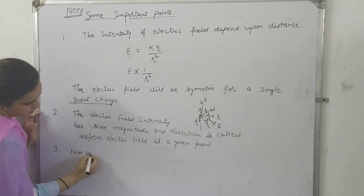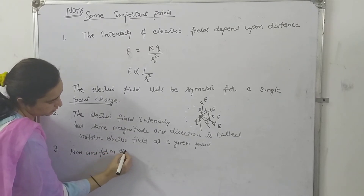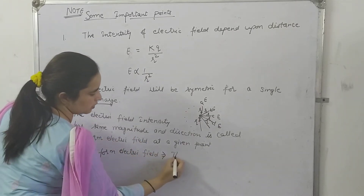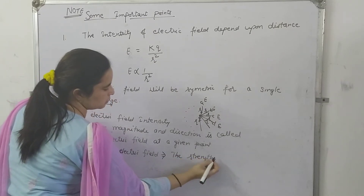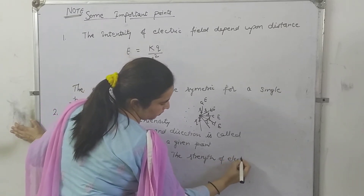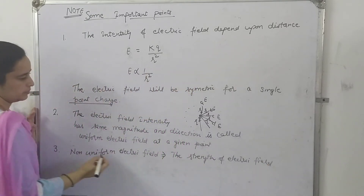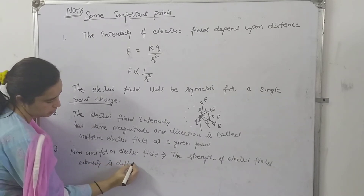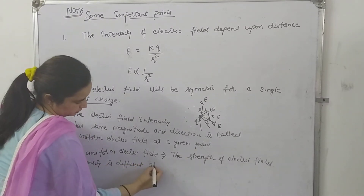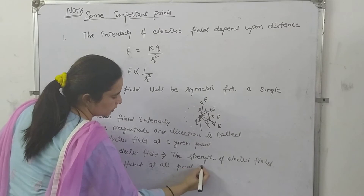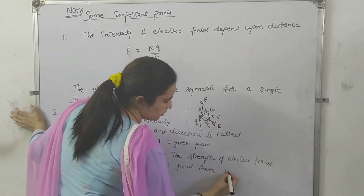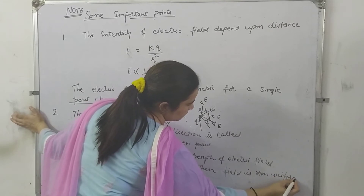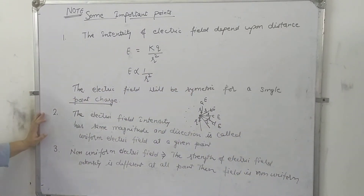The third point is for non-uniform electric field — the electric field varies from point to point, either in magnitude or direction.